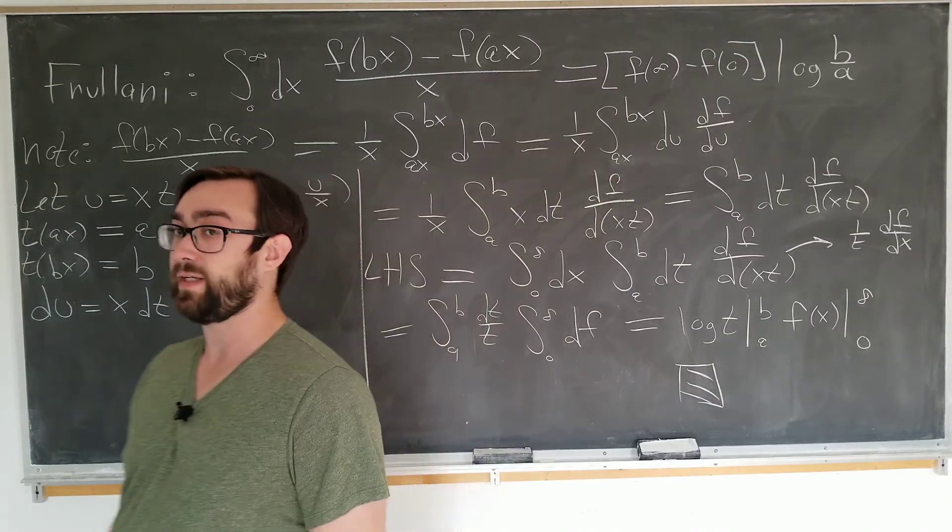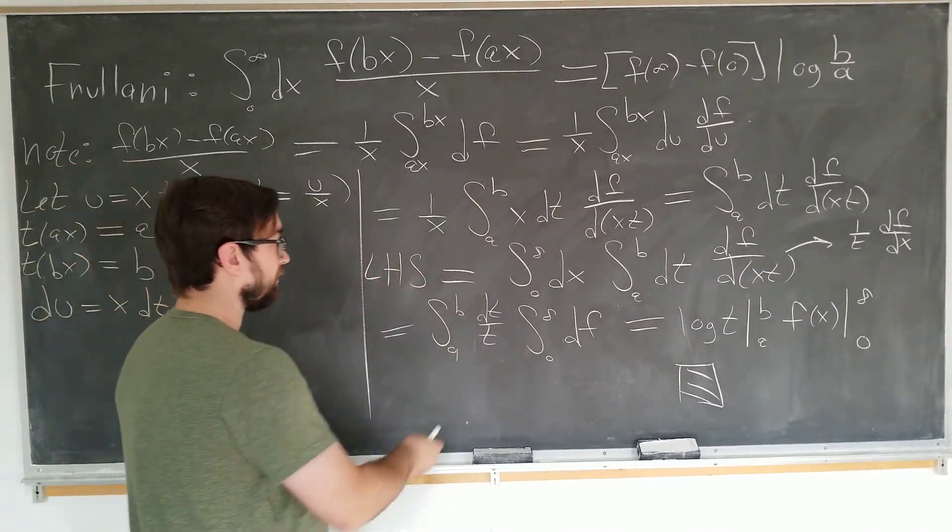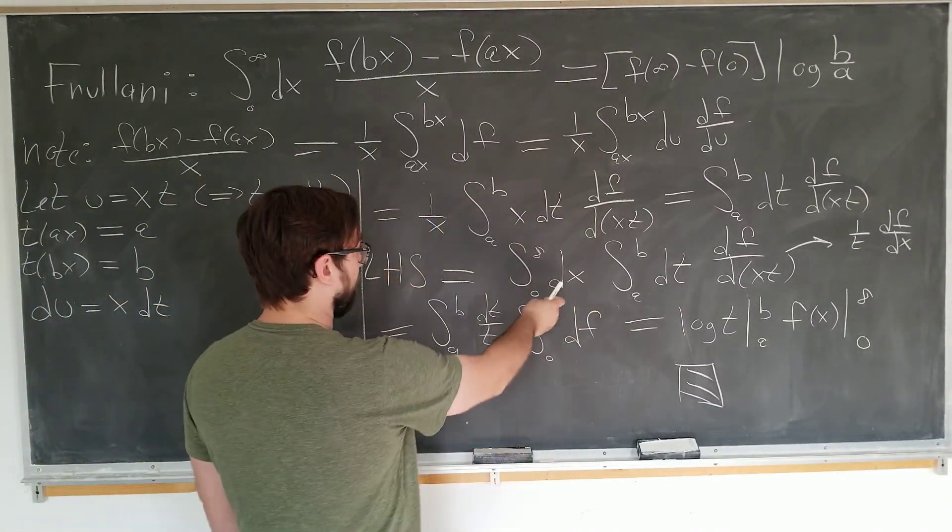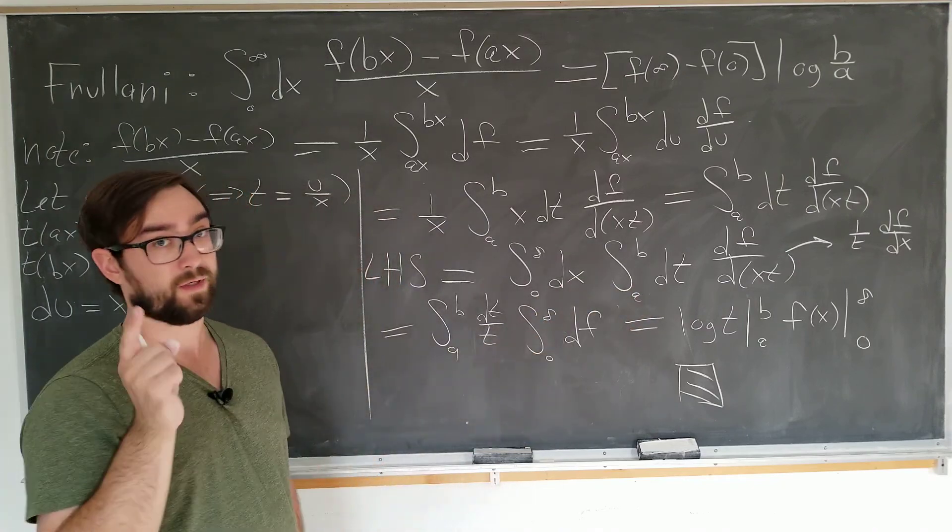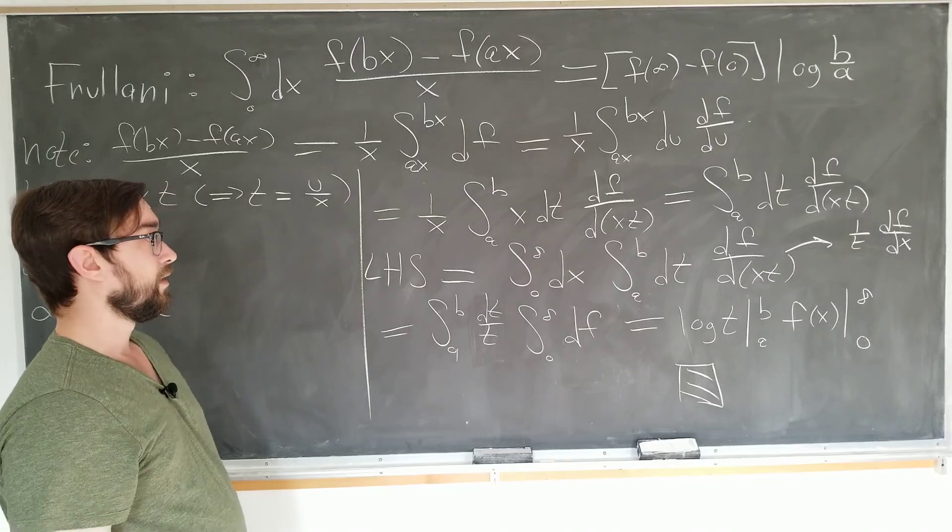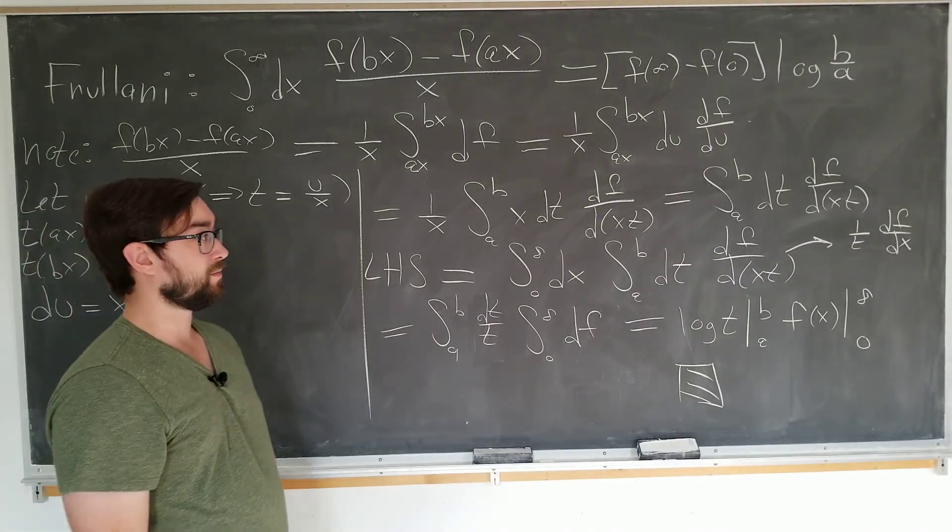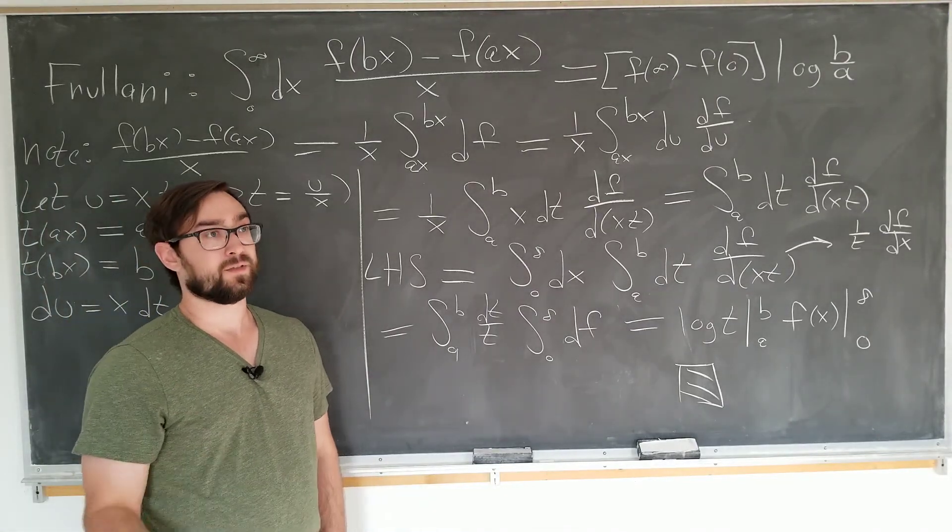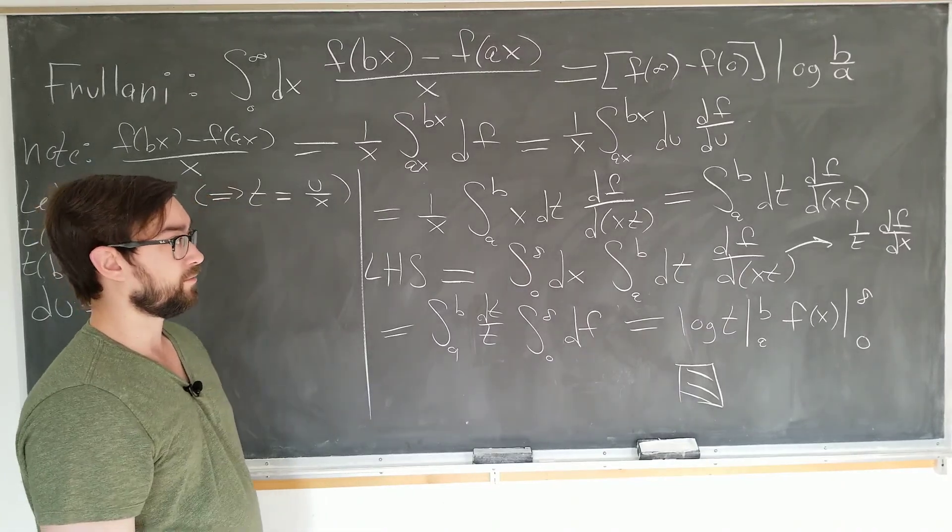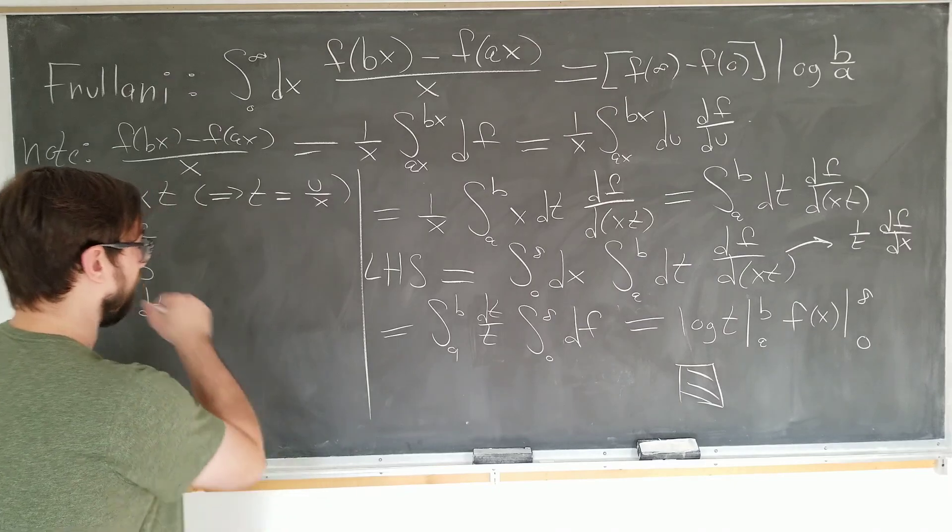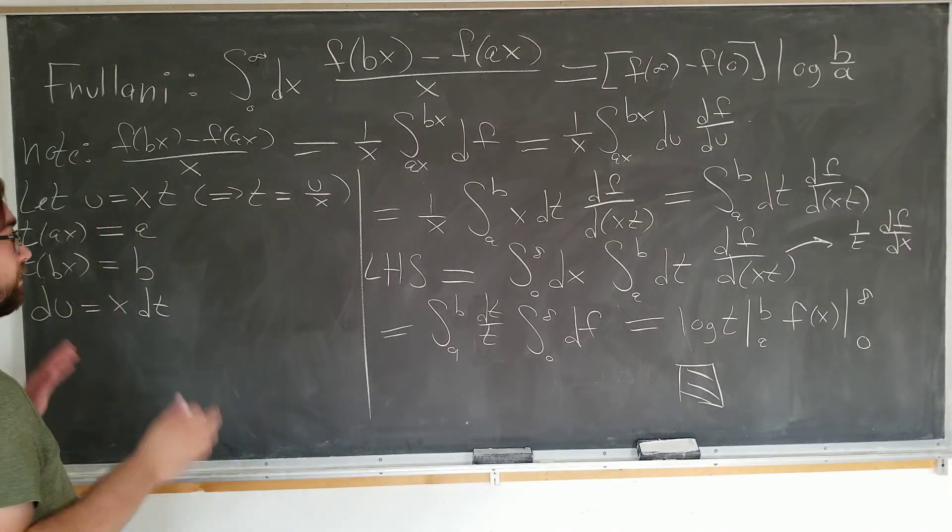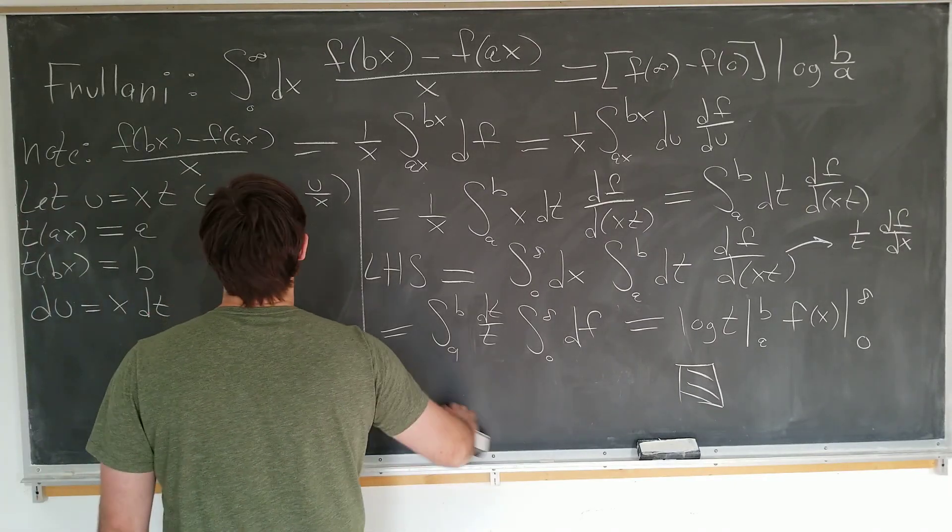Great. Notice we did use Fubini's theorem to interchange the limits of integration. Here we had the x integral and then the t. We did the t first and then the x. We can do this, number one, because we're physicists. And number two, because we're just going to assume that the function f satisfies the conditions of Fubini's theorem, which we indicated earlier.